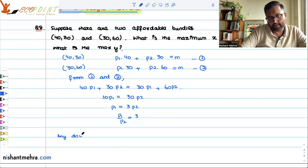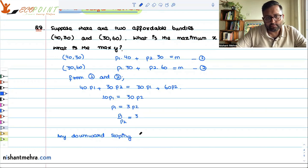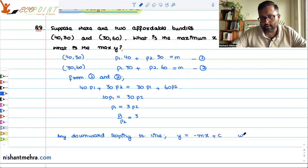Any downward sloping straight line could be represented as y equals minus mx plus c. Here, m is slope.